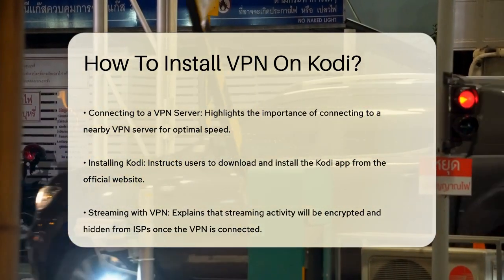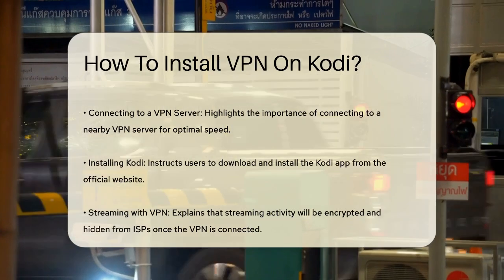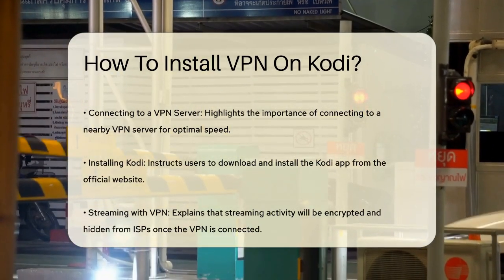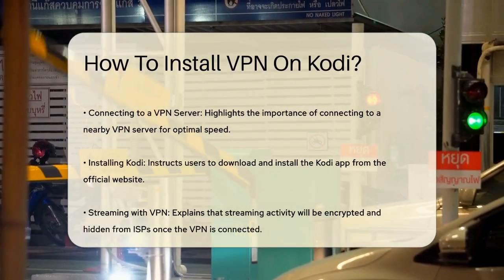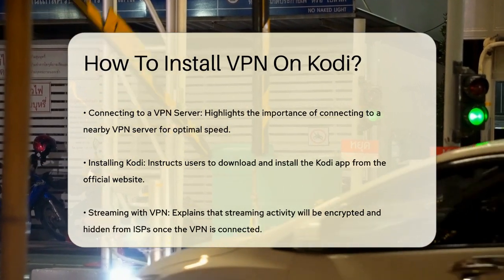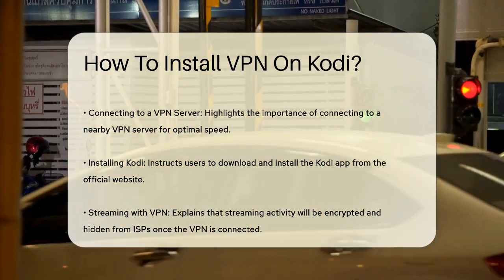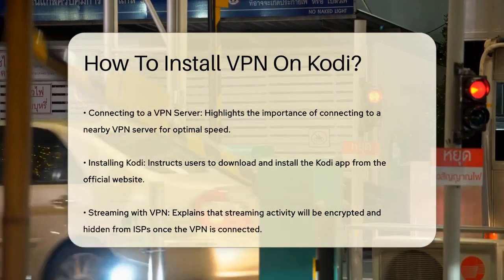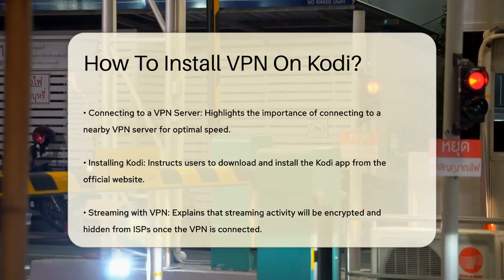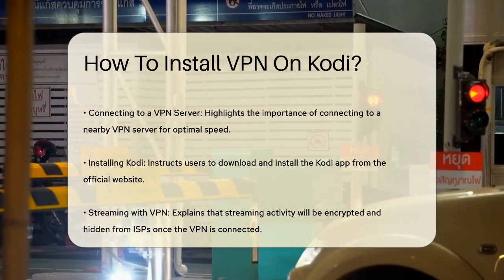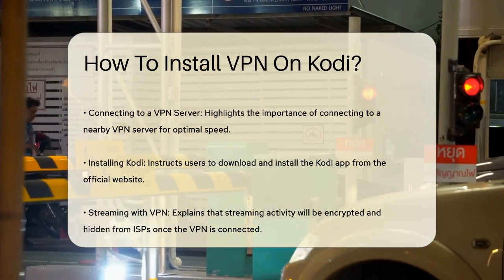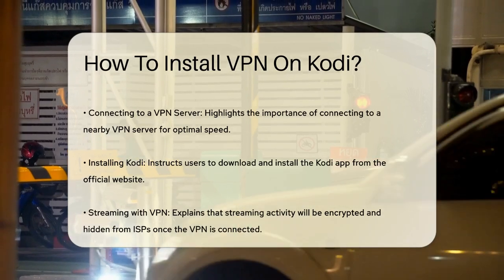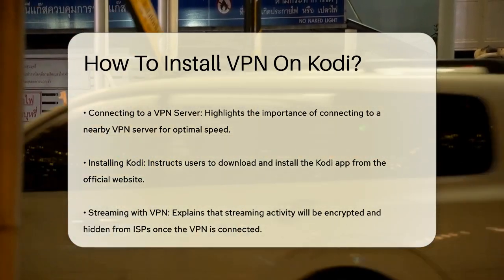On Android devices, the process is similar. Open the Google Play Store, search for your preferred VPN, and download it. Make sure to connect to the VPN before launching Kodi to avoid any IP leaks. You can also download the Kodi app from the Google Play Store and ensure it's the one developed by the Kodi Foundation.